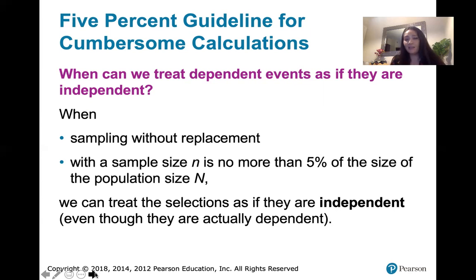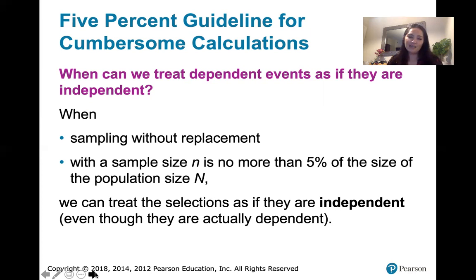Being able to treat them as independent means it's possible that the procedure could be estimated by a binomial probability distribution. That's why we're bringing this up here — we are interested in meeting the requirements for binomial probability distributions in order to compute probabilities, as well as means and standard deviations, as we'll talk about later.